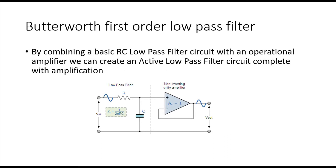At low frequencies the output will be the same as the input but with somewhat reduced amplitude, because the RC low pass filter provides some attenuation to the output signal even at low frequencies. That attenuation will be amplified by the op-amp, but at higher frequencies the signal is attenuated. The op-amp provides the amplification, so that is why it is called a Butterworth first order low pass filter — it provides amplification to the output.